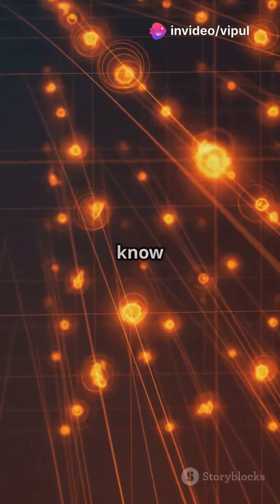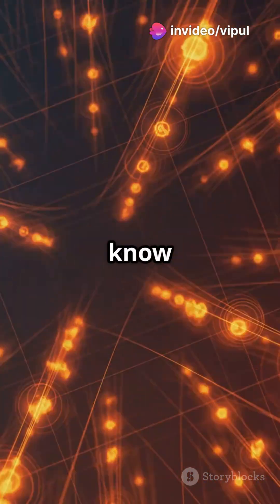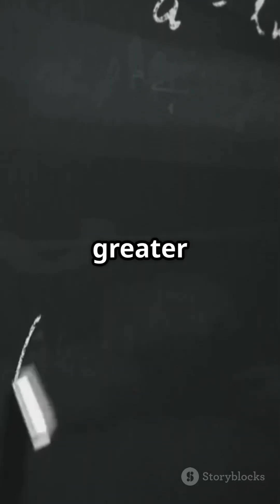The more precisely you know position, the less precisely you know momentum, and vice versa. The formula is delta x times delta p is greater than or equal to h over 4 pi.